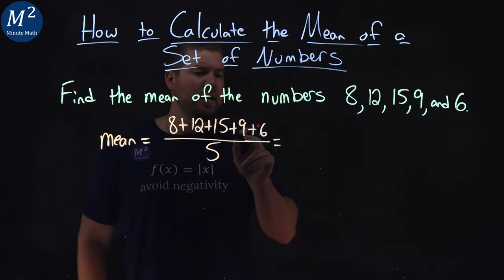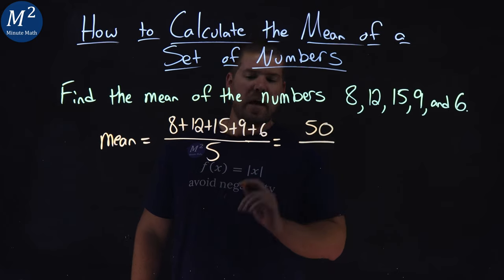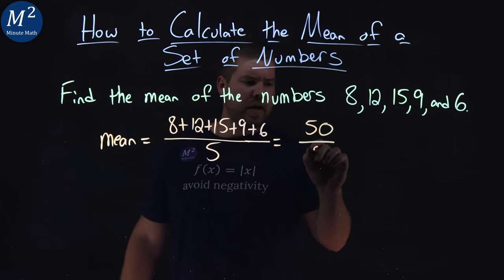8, 12, 15, 9, and 6 all added together become 50, and we put that over 5.